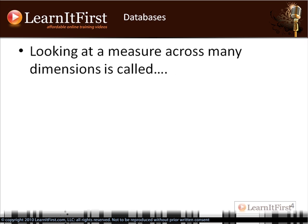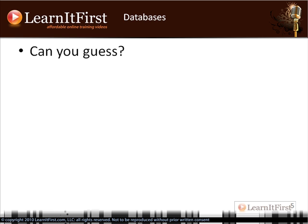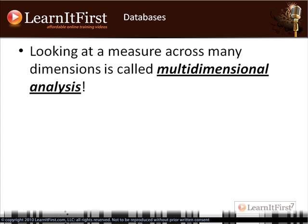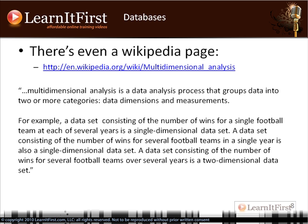What is it called when we look at a measure across several dimensions? It starts with an M — it's multidimensional analysis. When your users are wanting to look at something across two or more dimensions, this is multidimensional analysis. In fact, there's even a Wikipedia page — it's a common mathematical need to look at statistical numbers in a multidimensional matrix.